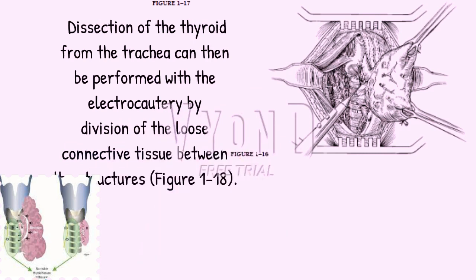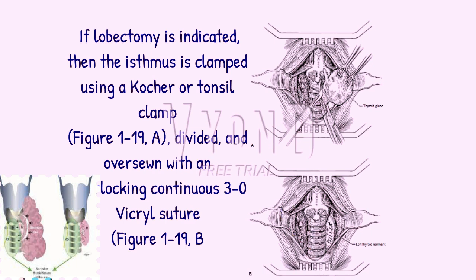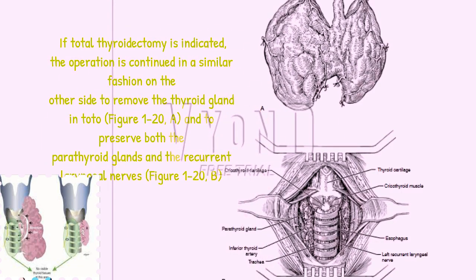Dissection of the thyroid from the trachea can then be performed with the electrocautery by division of the loose connective tissue between the structures, figure 1-18. If lobectomy is indicated, the isthmus is clamped using a Kocher or tonsil clamp, figure 1-19. If total thyroidectomy is indicated, the operation is continued in a similar fashion on the other side to remove the thyroid gland in total, figure 1-20, preserving both the parathyroid glands and the recurrent laryngeal nerves.